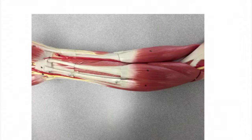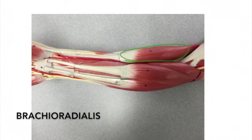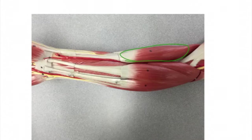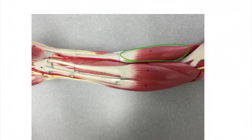Moving on to the antebrachium, or the forearm. Here we start with the brachioradialis. The origin is above the lateral epicondyle of the humerus. The insertion is the lateral surface of the radius above the styloid process. The action is to flex the forearm.